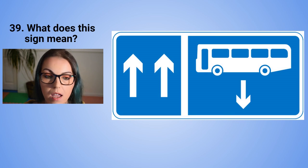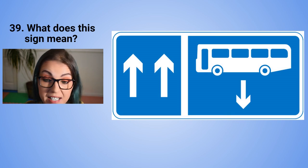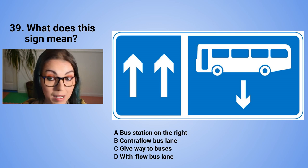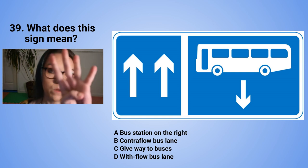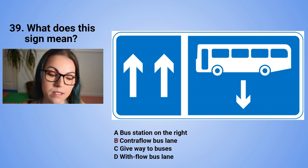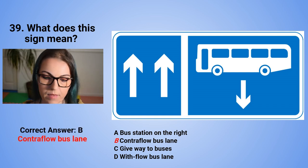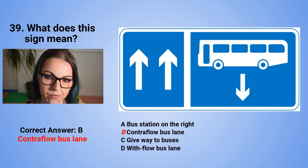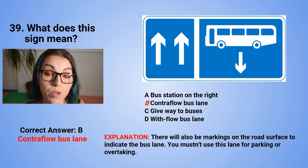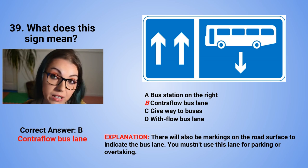Question 39: What is the meaning of this sign? A. Bus station on the right. B. Contraflow bus lane. C. Give way to buses. Or D. With-flow bus lane. The correct answer is B — contraflow bus lane. There will also be markings on the road surface to indicate the bus lane. You must not use this lane for parking or overtaking.